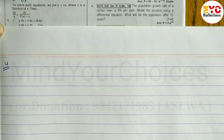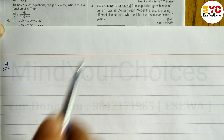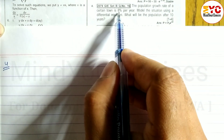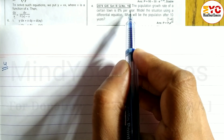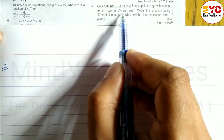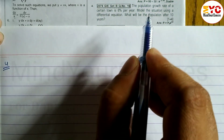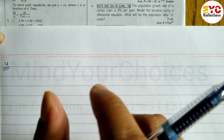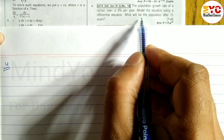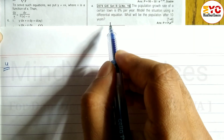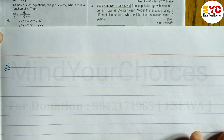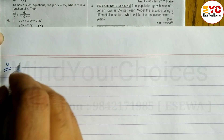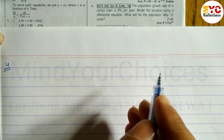Question number 4: The population growth rate of a certain town is 8% per year. We must model the situation using a differential equation and find what the population will be after 10 years.